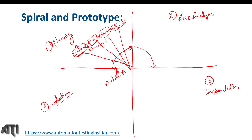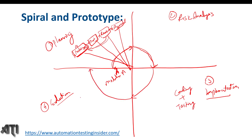Once risk analysis is done, we follow the same procedure as in spiral model — we do the risk analysis for module A. Then the third phase is actual implementation of the product or project, where we do coding and testing. Coding and implementation is coding and testing in this third phase of spiral model. Then the customer will evaluate and give feedback about module A. If they want to make any change, they will revert it back to the developer; otherwise we will release it.